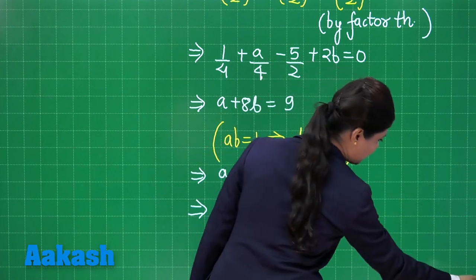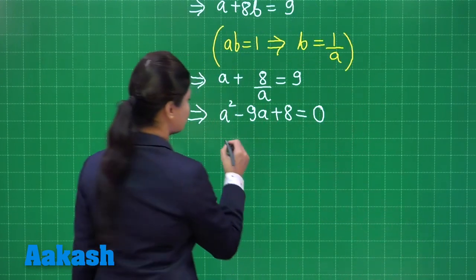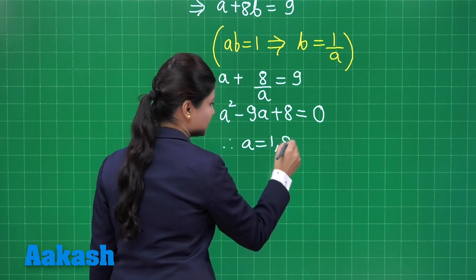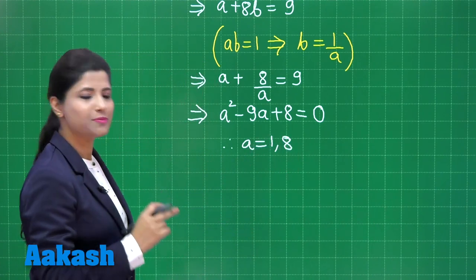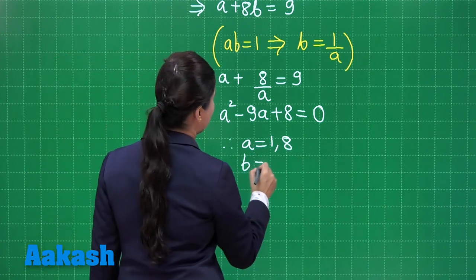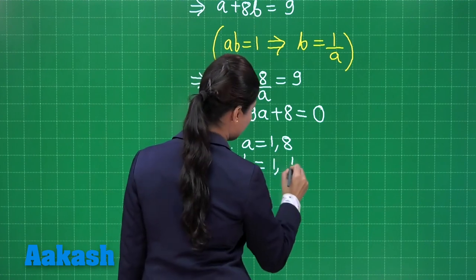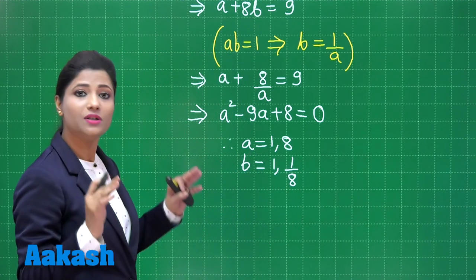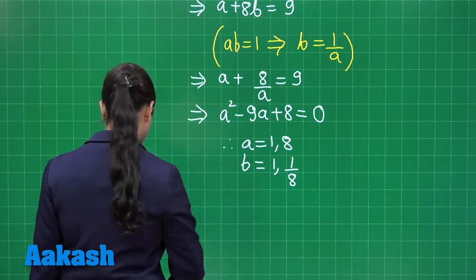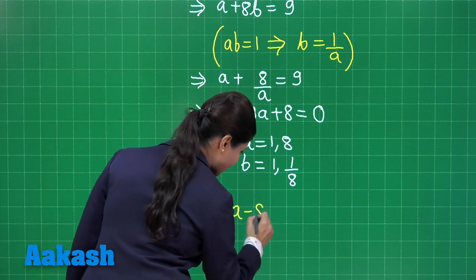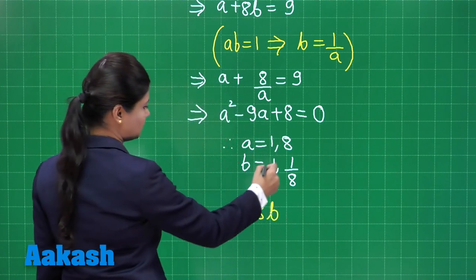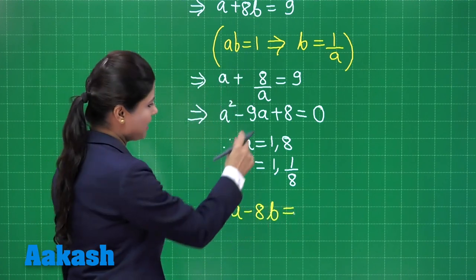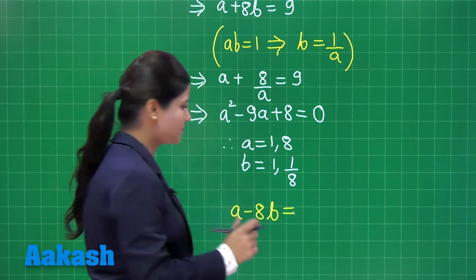Solving this quadratic equation, the possible values of a are 1 and 8, giving corresponding values of b as 1 and 1 upon 8. Substituting the first pair gives a minus 8b equal to minus 7, and for the second case, the value is plus 7.